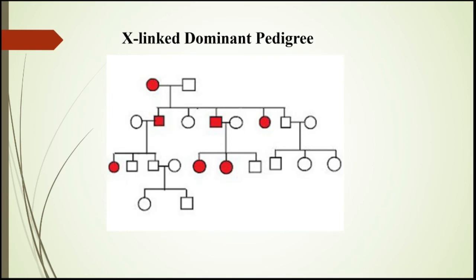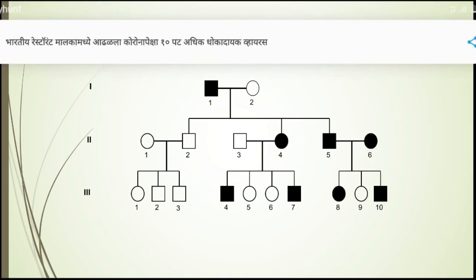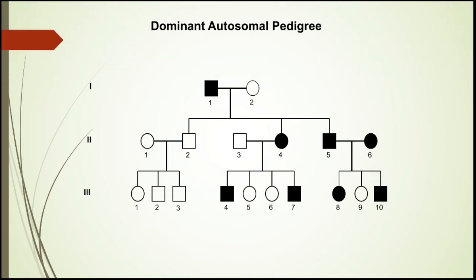Here is one example of X-linked dominant pedigree. In this pedigree you can see that the number of affected females is more than males, and the trait is transferred from female to males and from males to their daughters but not to their sons, and every generation gets at least one affected individual. Hence it is X-linked dominant. In the second example of autosomal dominant pedigree, every generation has at least one affected individual, and male-to-male gene transfer is observed — from affected male to affected child — hence it is autosomal dominant.